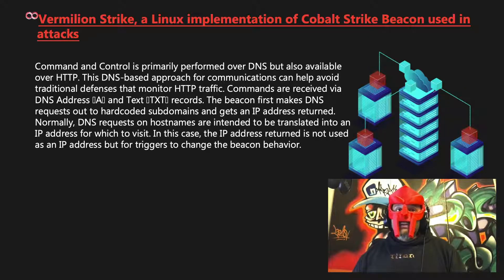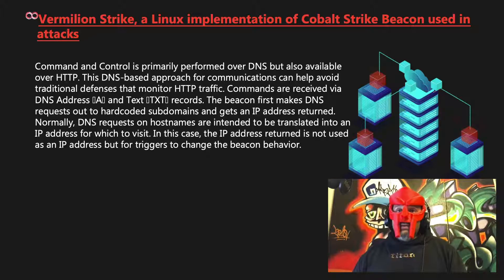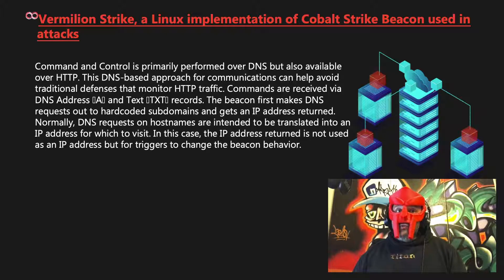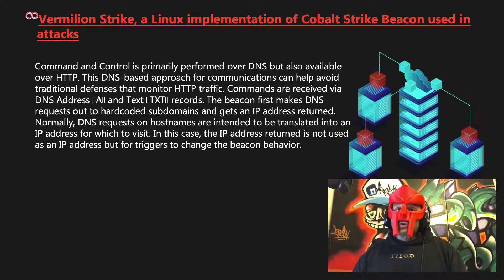Commands are received via DNS address and text records. The beacon first makes DNS requests out to hard-coded subdomains and gets an IP address returned. Normally, DNS requests on hostnames are intended to be translated into an IP address to visit. In this case, the IP address returned is not used as an IP address, but as a trigger to change the beacon's behavior.